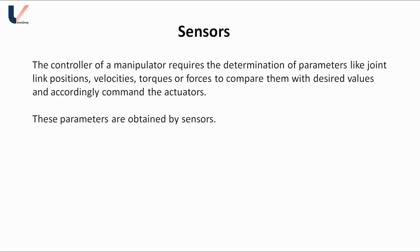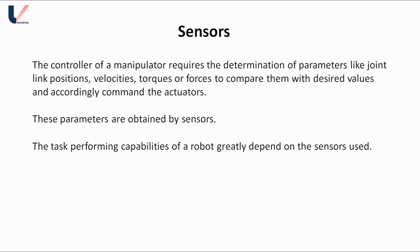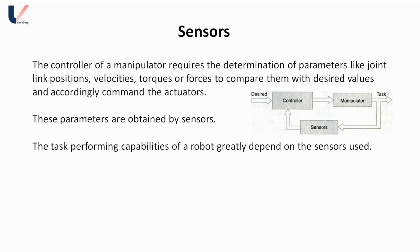The controller gets these parameters from the output of the sensor and compares them with desired values, and accordingly commands the actuator. Looking at the block diagram, values obtained from the sensors are compared with the desired values by the controller, and accordingly signals are given to the manipulator.